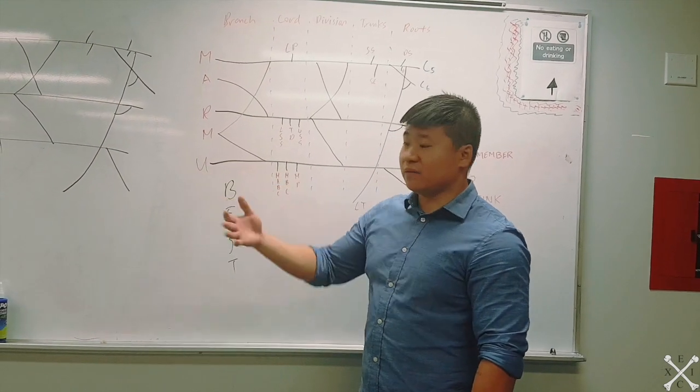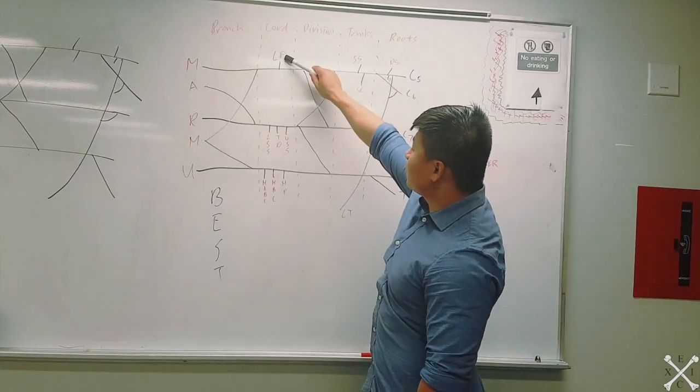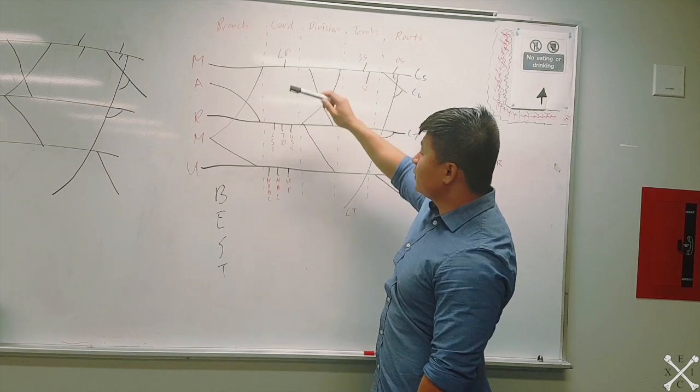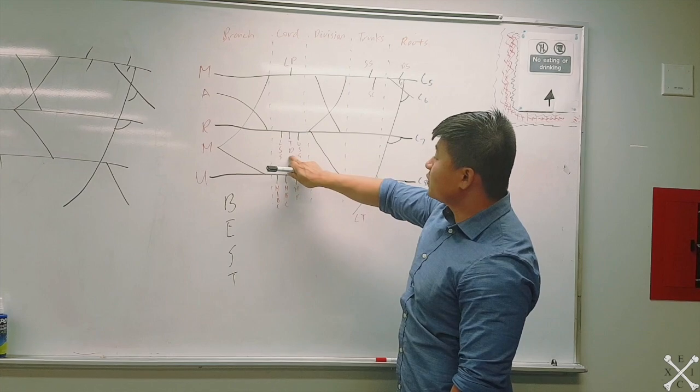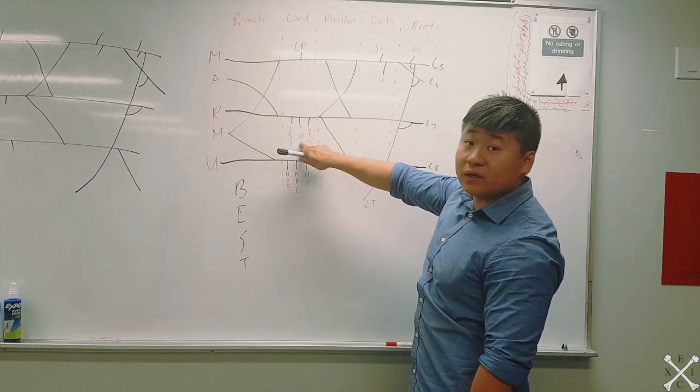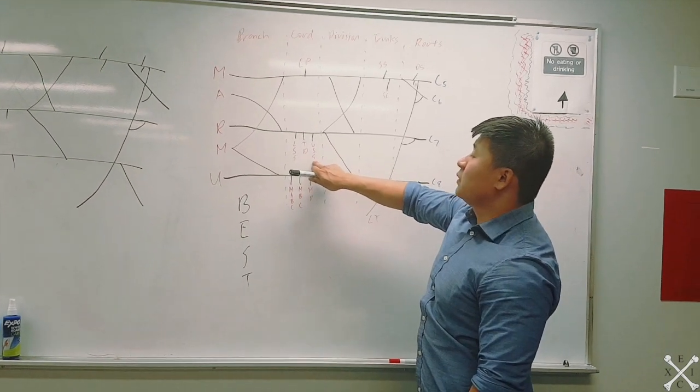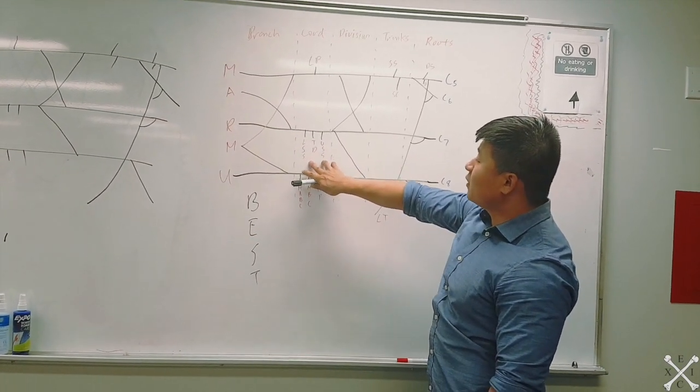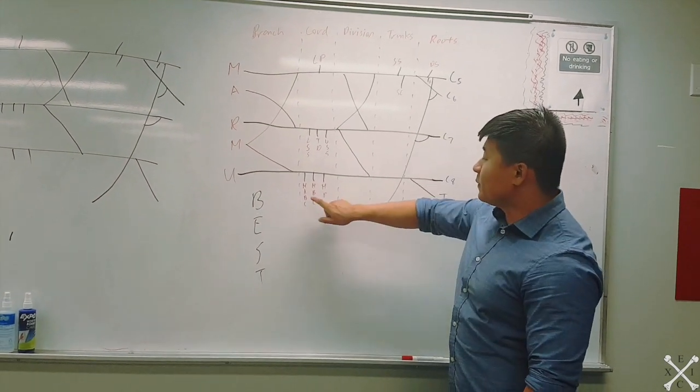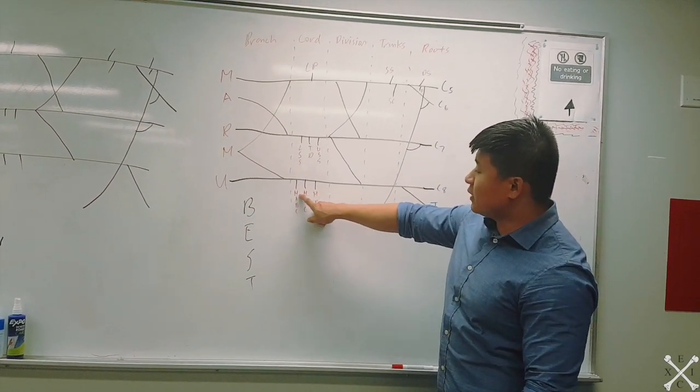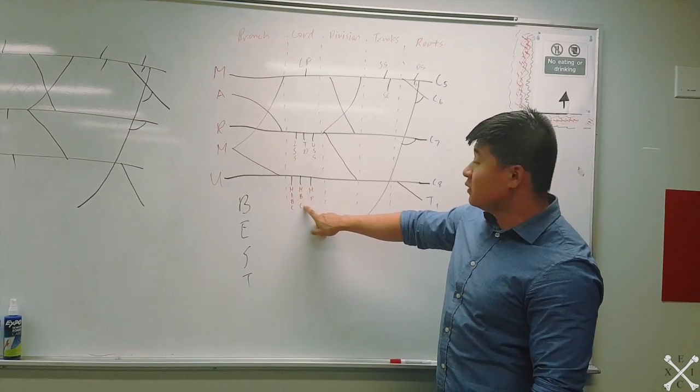We have the lateral pectoral nerve and the lower subscapular. The thoracodorsal innervates your latissimus dorsi. The upper and lower subscapular innervates your subscapularis. This one is your medial antebrachial cutaneous and your medial brachial cutaneous—these are your sensory nerves. We already mentioned the medial pectoral.